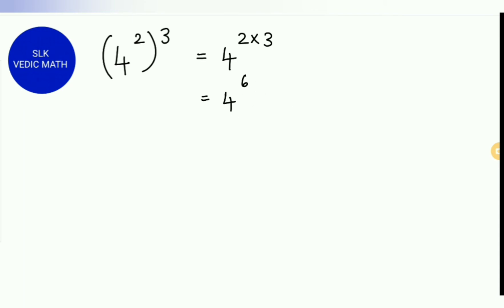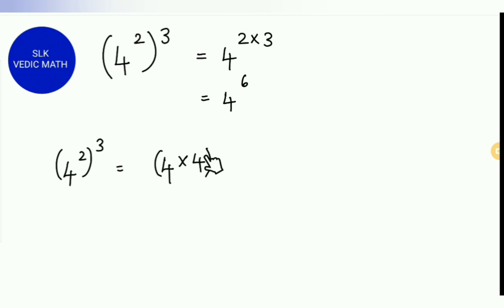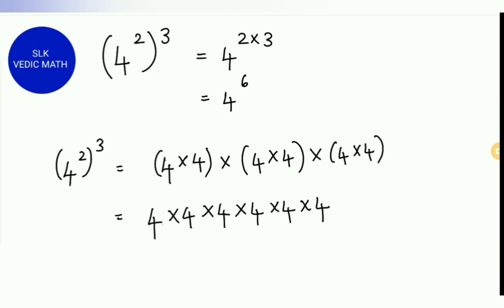Now let's try the expanded form for better understanding. The expression is 4 power 2, raised to the power of 3. So 4 power 2 is 4 into 4, and we write it 3 times: 4 into 4 into 4 into 4 into 4 into 4. Counting the 4s — 1, 2, 3, 4, 5, 6 — there are six 4s. So it is 4 power 6. Both ways give the same answer: 4 power 6.